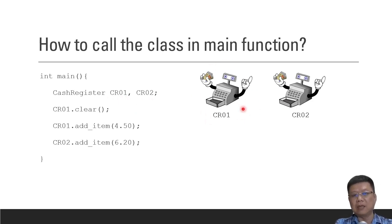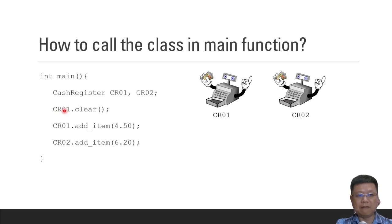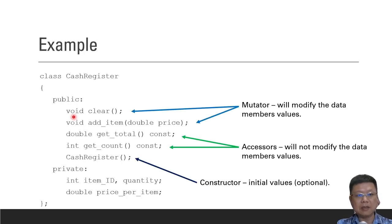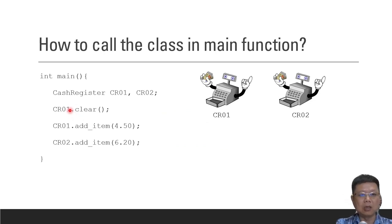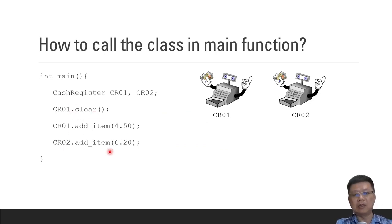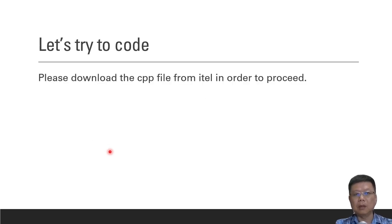CR02 would be the second cash register. When we want to call the cash register, we call the variable name and then call the functions using a dot. So we use dot clear, dot add item, dot get total, dot get count, and so on.